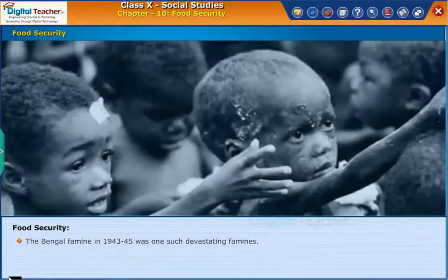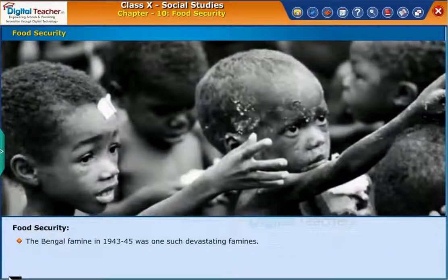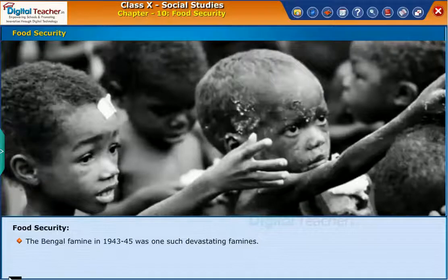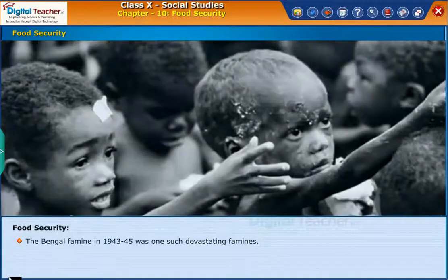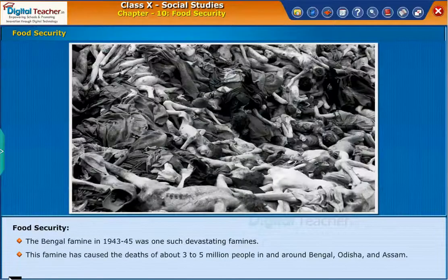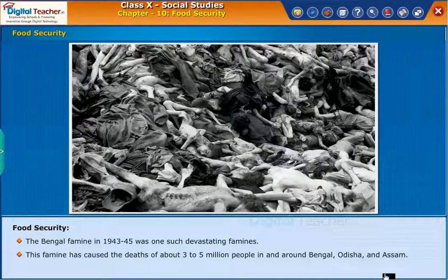The Bengal famine of 1943 to 1945 was one such devastating famine. This famine caused the deaths of about three to five million people in and around Bengal, Odisha, and Assam.